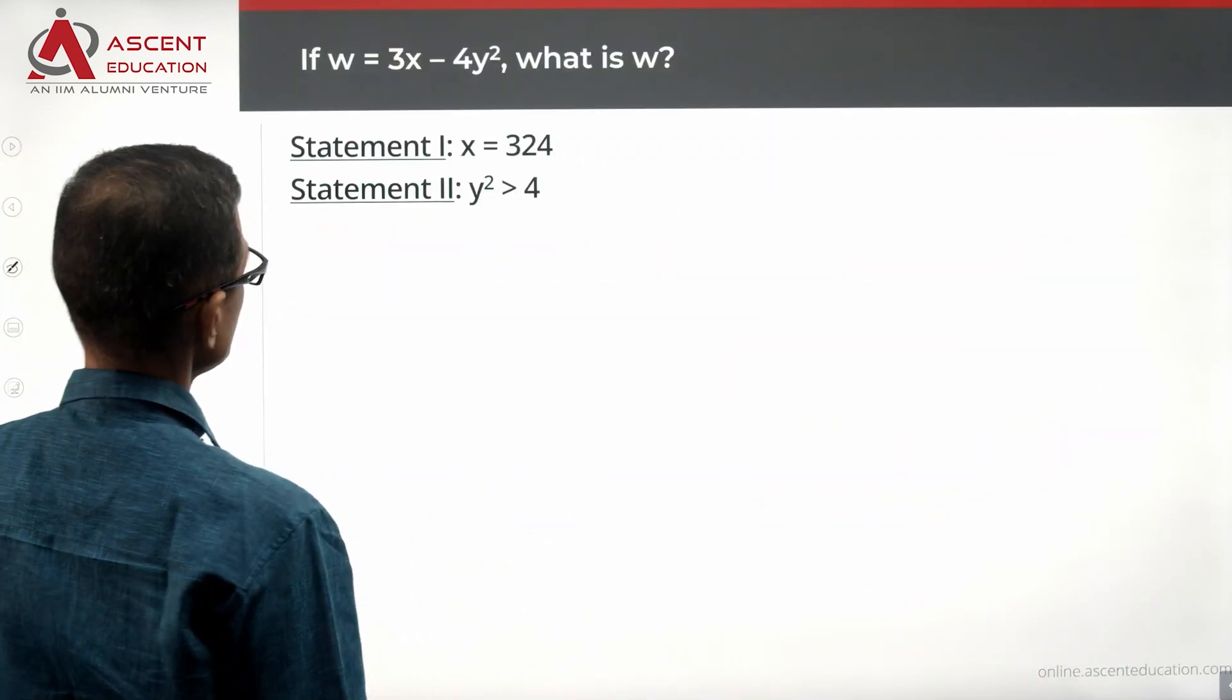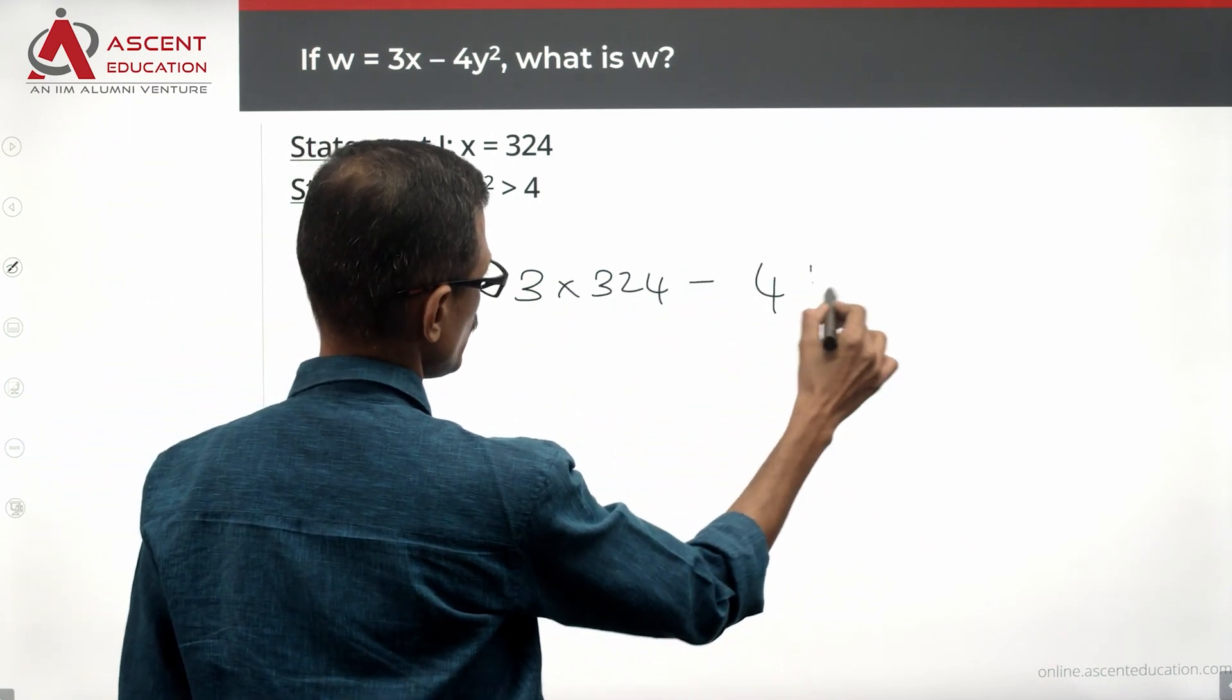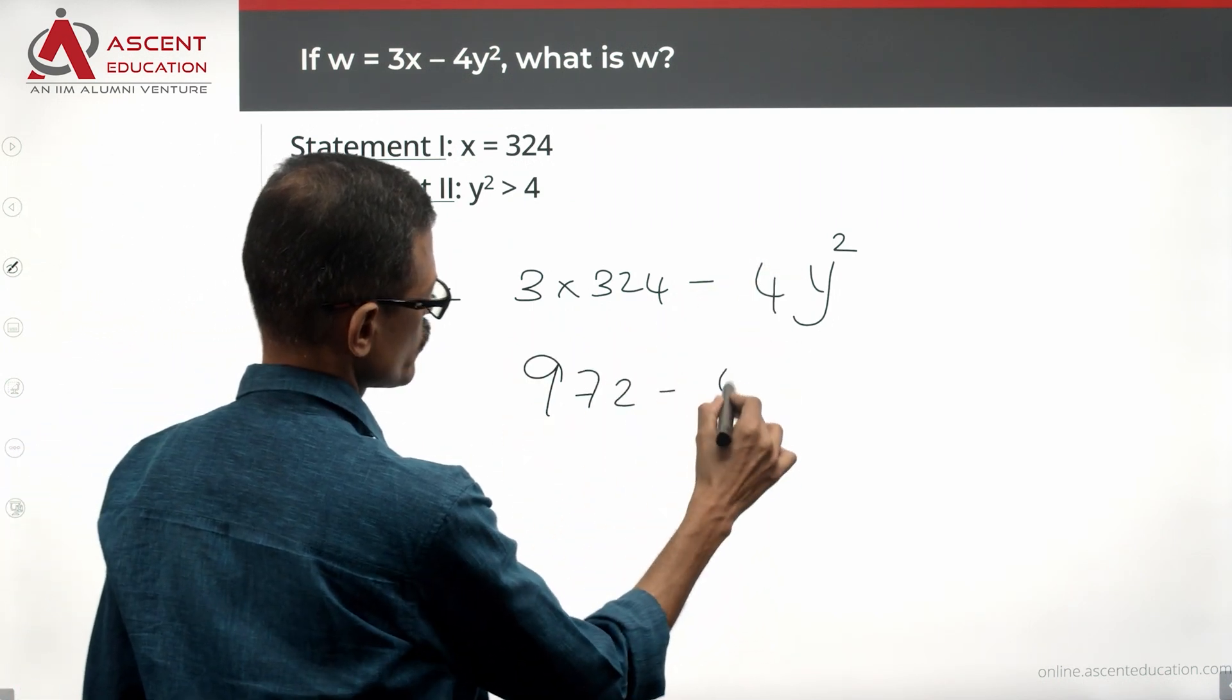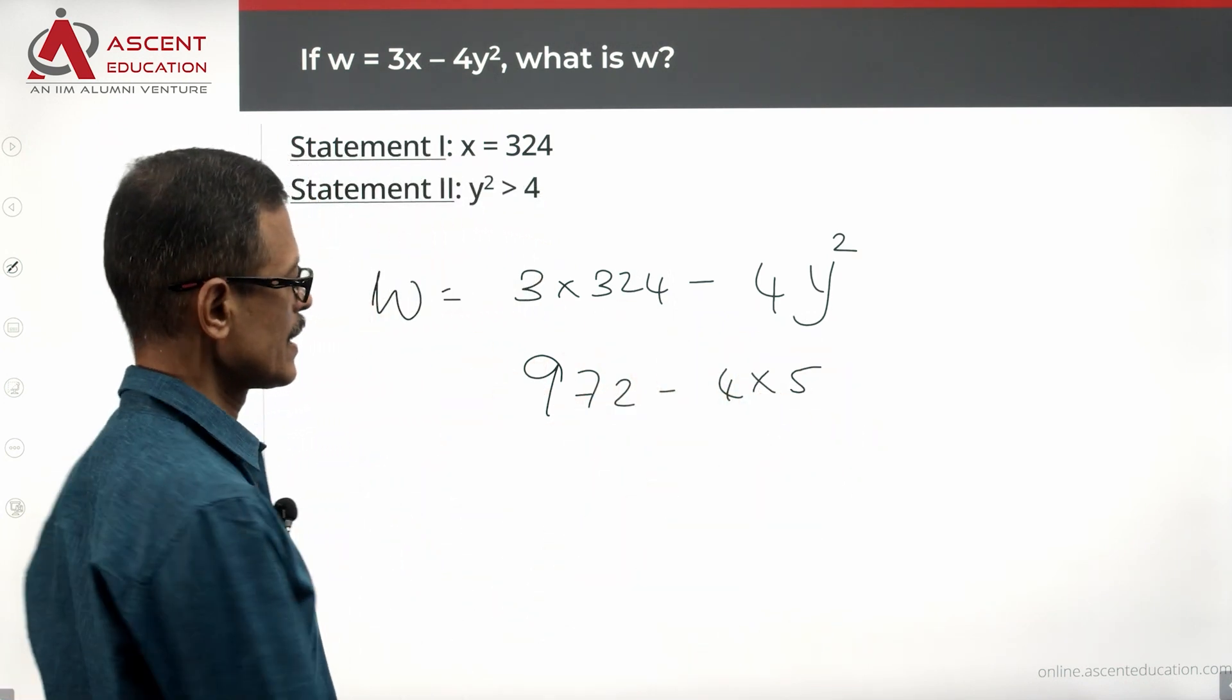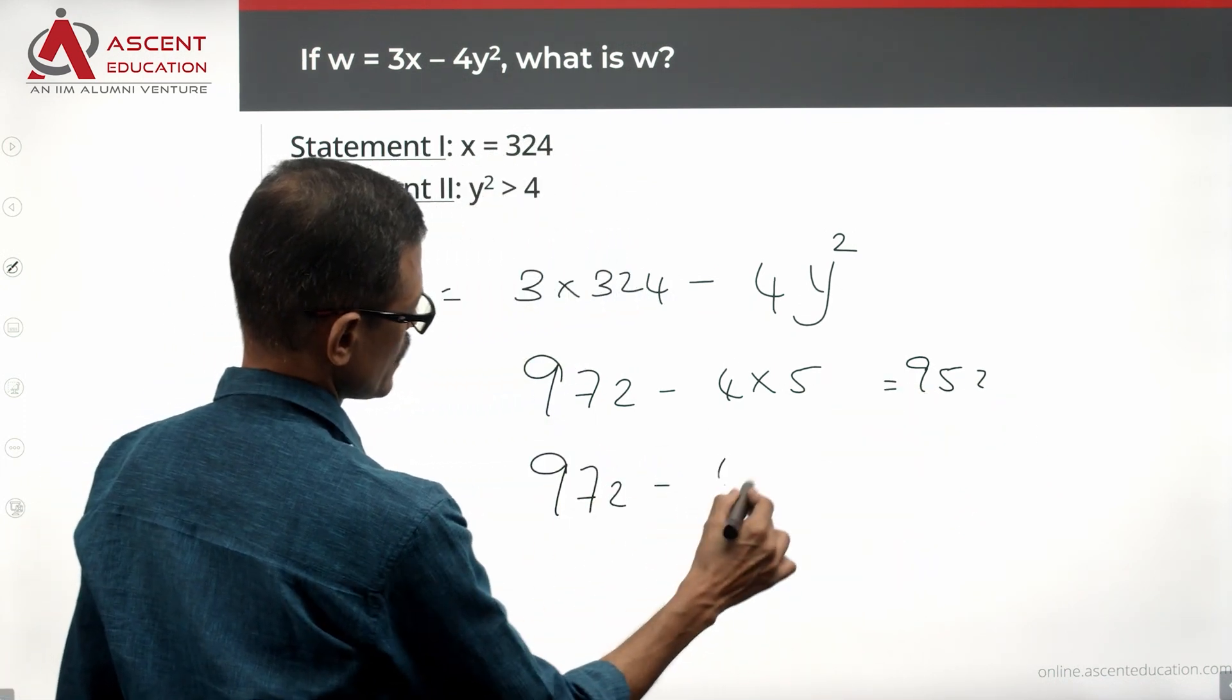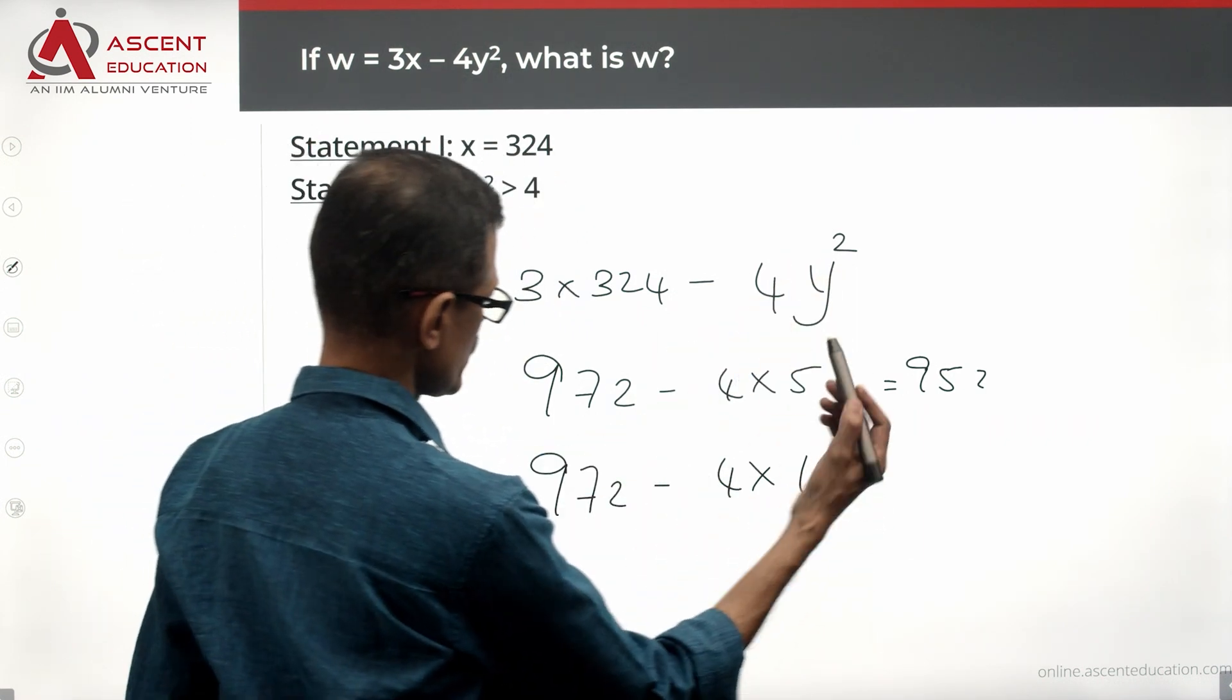Let's combine them and see whether it makes sense. w = 3 × 324 - 4y², but y² is a number greater than 4. So w = 972 - 4 × 5, if y² is 5. We will get an answer equal to 952. The same thing can be 972 - 4 × 16, if y² is 16, which is definitely greater than 4. So this is 64, which will